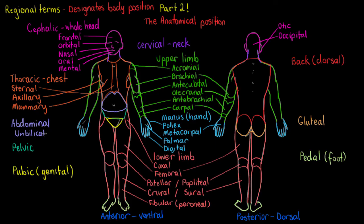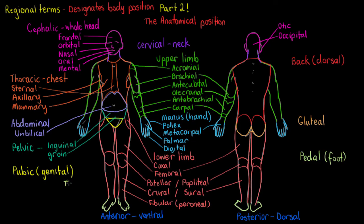The abdominal region has only one subdivision: the umbilical, which just refers to where your belly button is — where your umbilical cord was when you were born. The pelvic region has two subdivisions: inguinal and groin. The inguinal area is just below your abdominal region, and your groin is going to be just above your pubic region. The pubic region itself doesn't have any subdivisions.